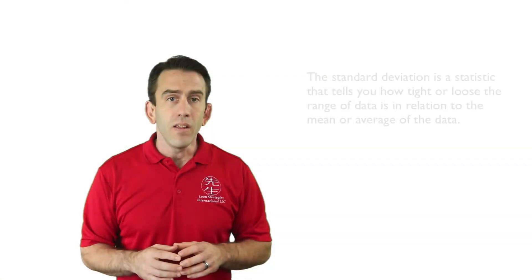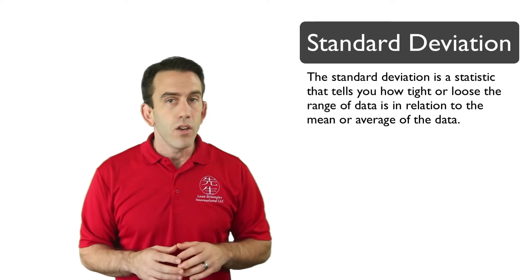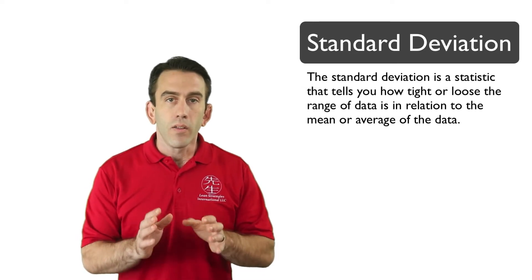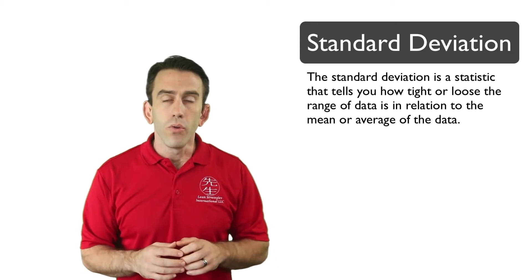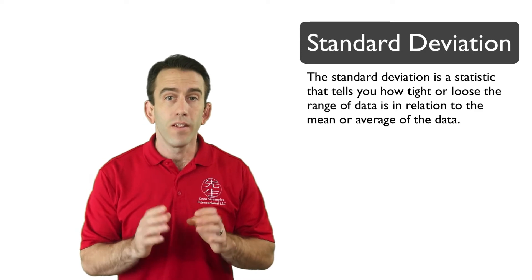With that said, we can assume that some percentage of outputs will contain either defects or be defective. In Six Sigma, we refer to these deviations as standard deviation. The standard deviation is a statistic that tells you how tight or loose the range of data is in relation to the mean or average of the data.